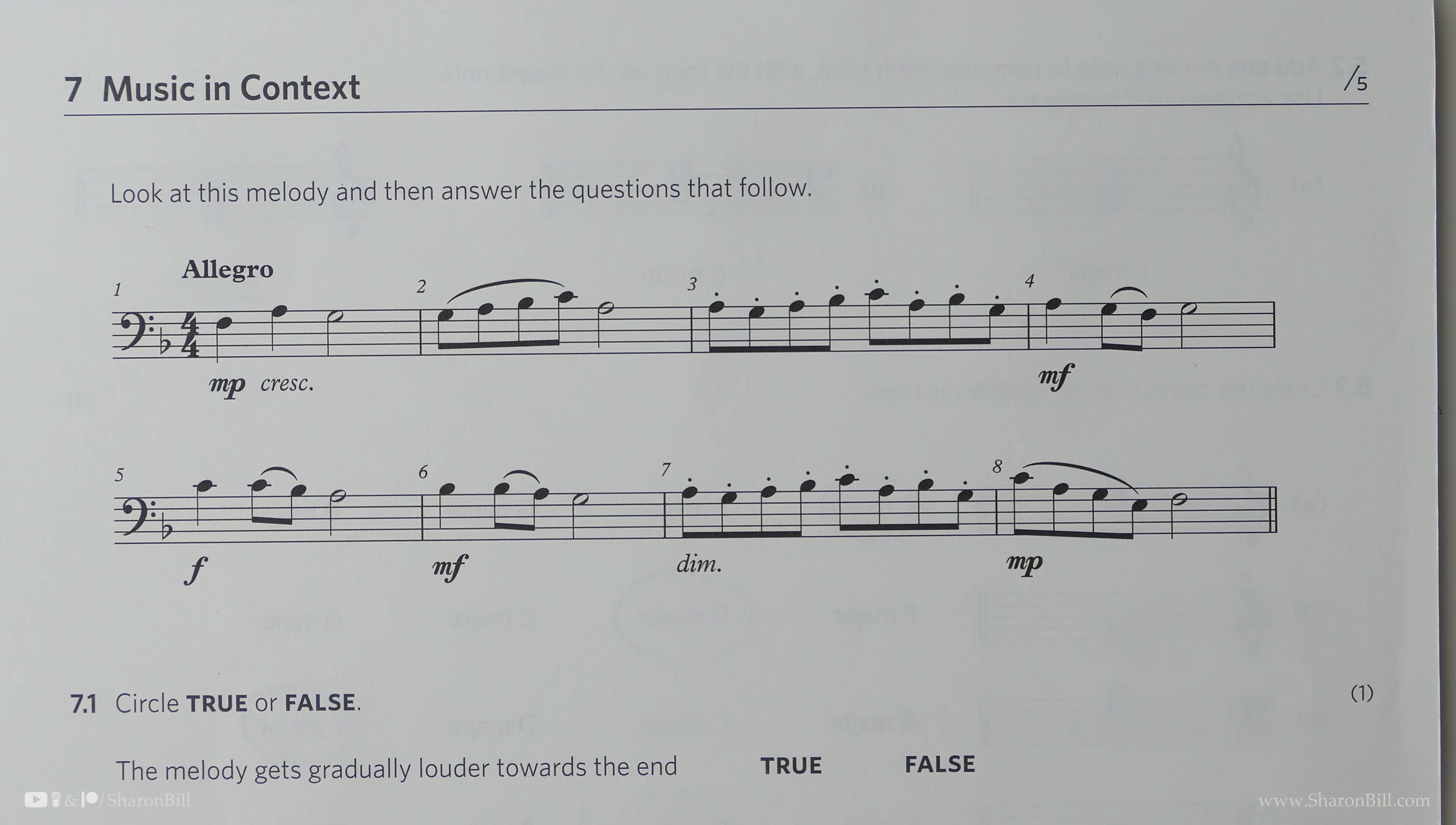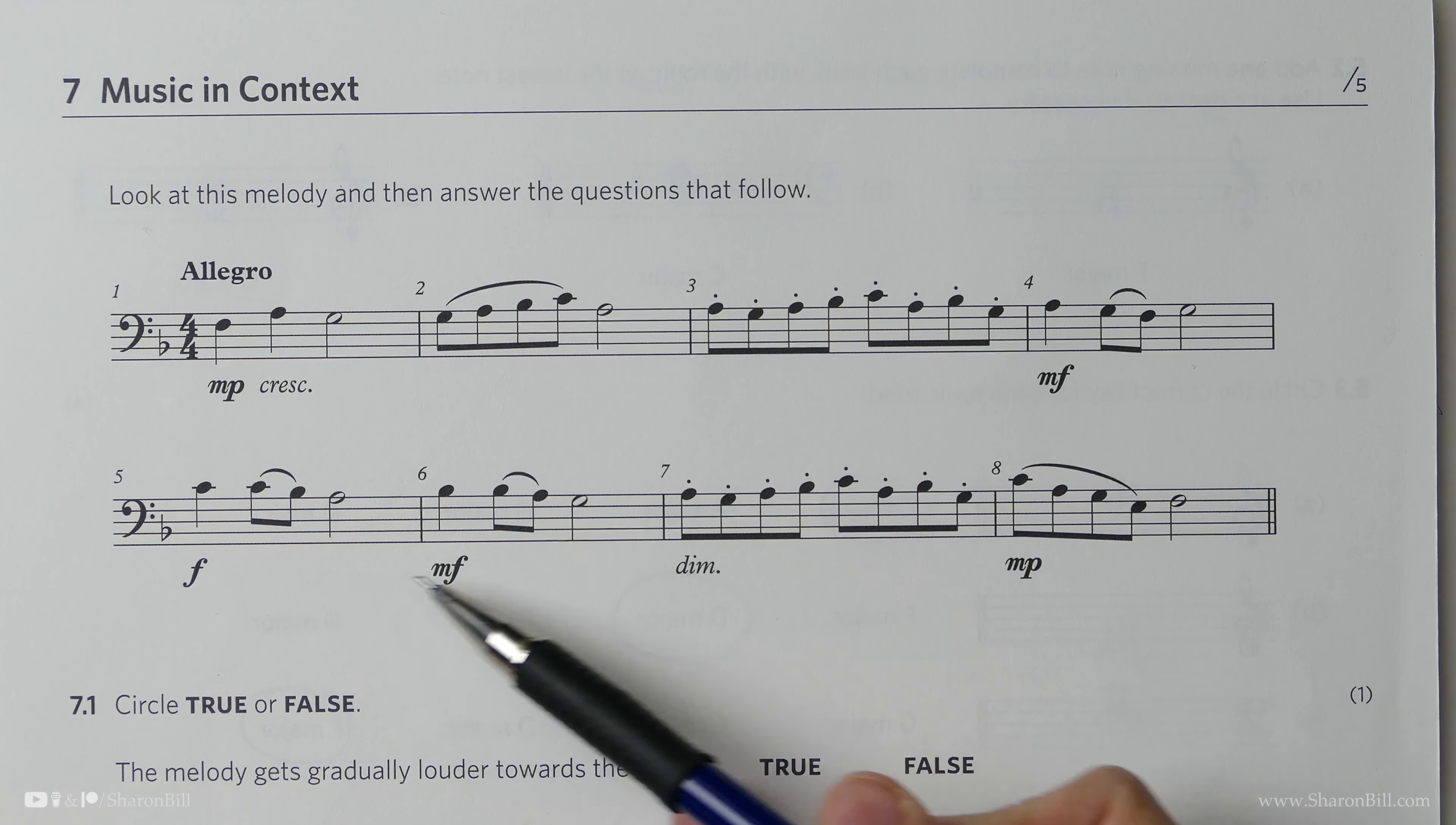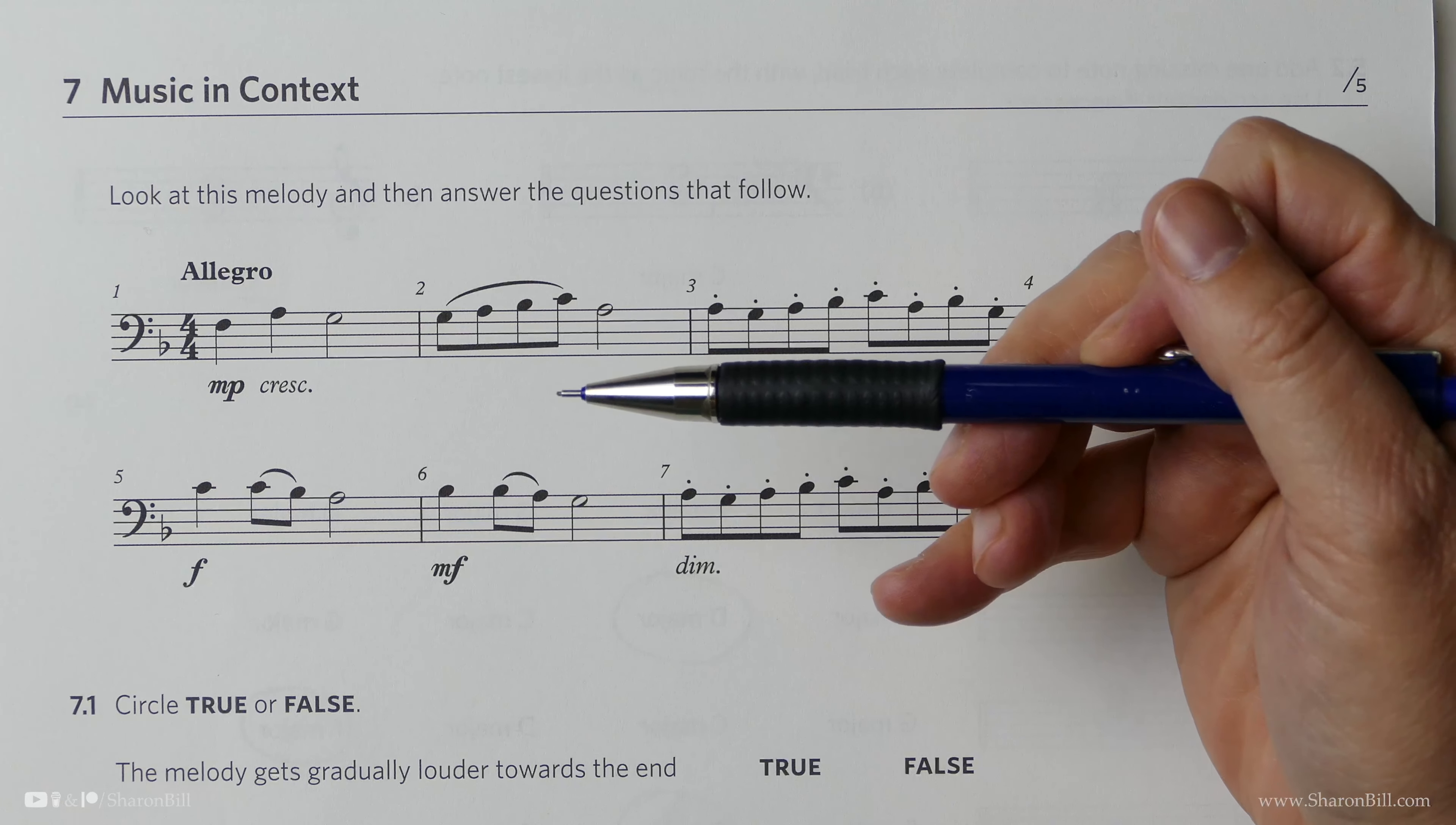And here we have the opportunity to look at a section of music and analyze exactly what's going on and answer some questions relating back to this. So we have to be observant as to what the composer has given the performer, because remember, this is to be played, and we're just dissecting what's going on. This is where it's so fab to just peel back the layers of the music.